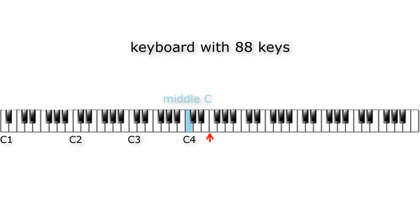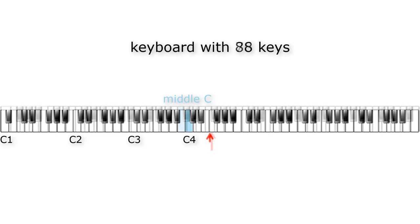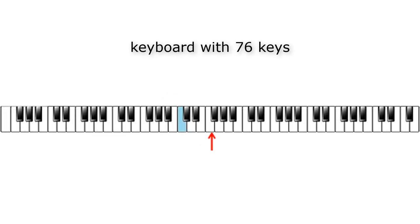With the same method we can find the middle C on other keyboards. Now I will not do this for every keyboard, but let me take one other example, for example a keyboard with 76 keys. As you can see, I indicated the exact middle of the keyboard with a red arrow, and the C just on the left side of it is the middle C.